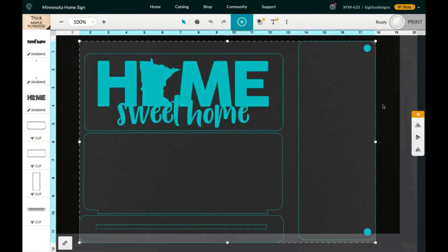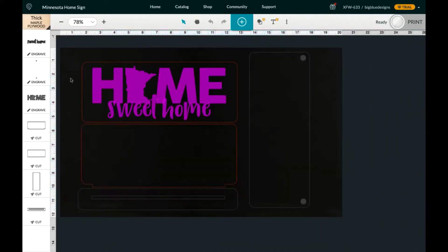So here's the Minnesota state sign that I have open in the Glowforge. If you're going to do it like I did it, I used two different kinds of material: a walnut plywood and a maple plywood to give it some contrast.